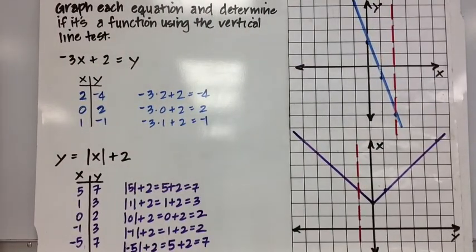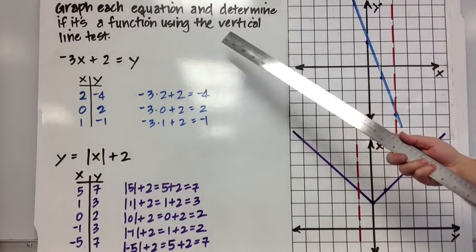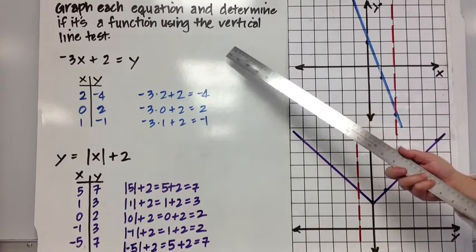So let's graph some equations and let's use the vertical line test to see if they are in fact functions. So our first equation is negative 3x plus 2 equals y. We're going to pick values of x, substitute into the equation, and solve for y.